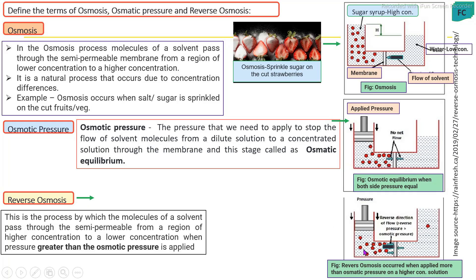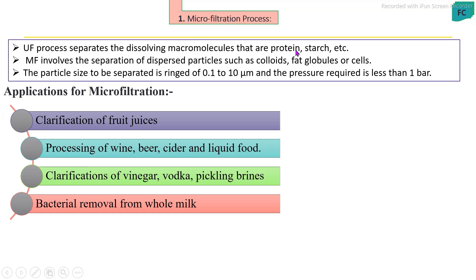Reverse osmosis is mostly used for the preparation of concentrated products. Regarding the application of microfiltration: microfiltration is used in the food processing industry mainly for the clarification process. Liquid foods containing colloidal particles, dissolved particles, or microbial loads are clarified using this process — for example, fruit juice, wine, beer, ciders, vinegar, alcoholic beverages, brine syrups, and for removal of microbes from whole milk and whey. These liquid foods are clarified by the microfiltration process.